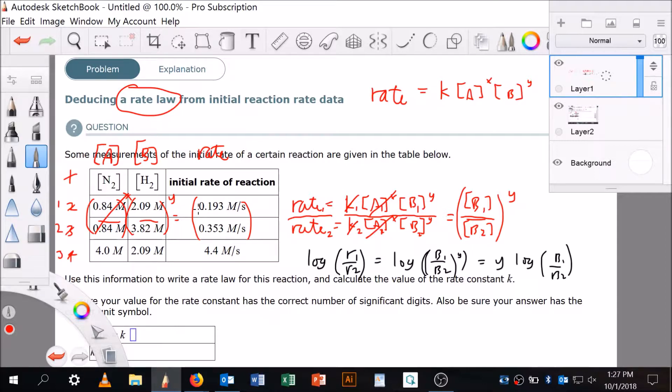I'm going to use my calculator. 0.193 divided by 0.353 equals 0.5467, so this ratio equals 0.5467. Now let's do 2.09 divided by 3.82, which equals 0.5471, and this is raised to the Y.